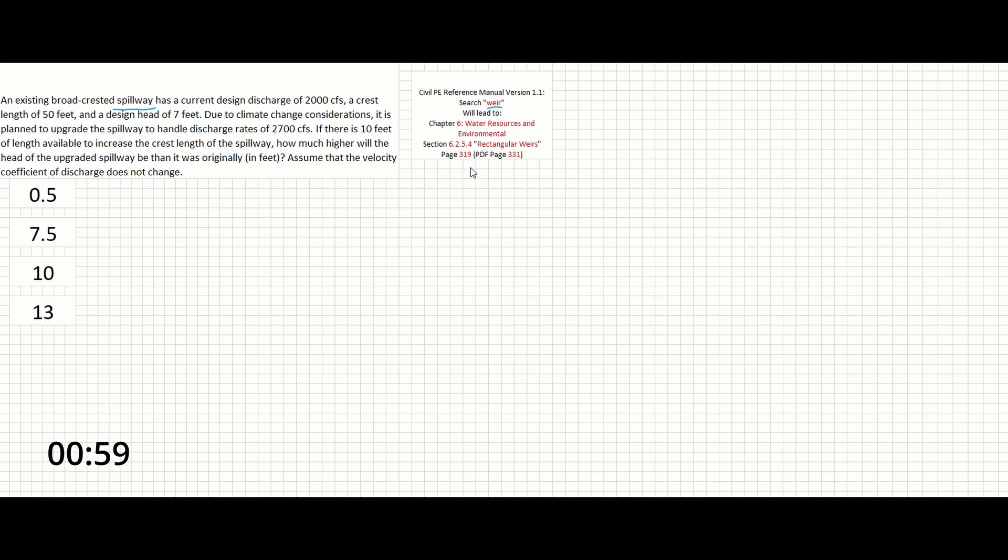On page 320, the horizontal broad-crested weir equation can be written as follows. Q equals 2 over 3 times CV times LE times the square root of 2G times HE raised to the 3 over 2.